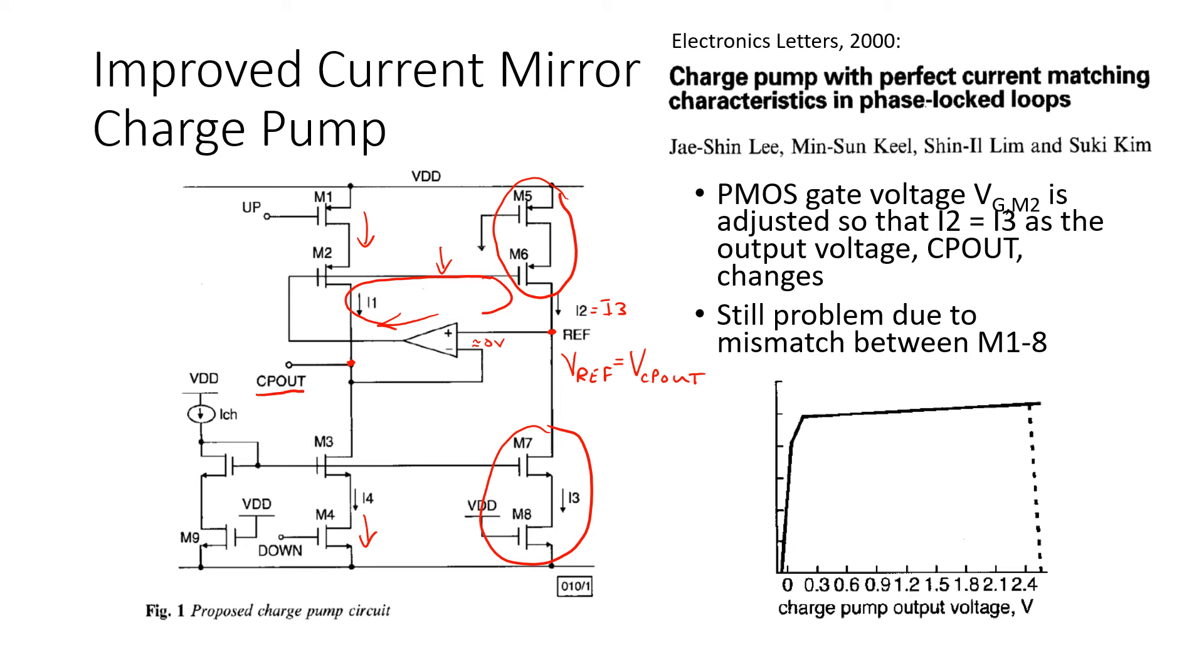Now keep in mind, all this implies is that the pull-up and pull-down currents are equal regardless of the output voltage. It doesn't mean that they stay the same across all output voltages. So the situation is depicted here on this plot. Here we see that the current through the pull-up and pull-down paths represented by the solid black line and the dashed line exactly lie on top of each other over a wide range of voltages at the output of the charge pump.